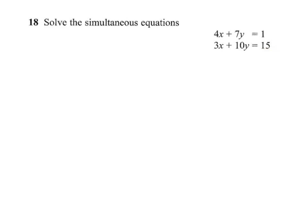What I'm going to do to start with is multiply the equations by numbers that will enable the x's to be the same. So I'm going to multiply the top equation by 3, and that will give me 12x plus 21y equals 3.